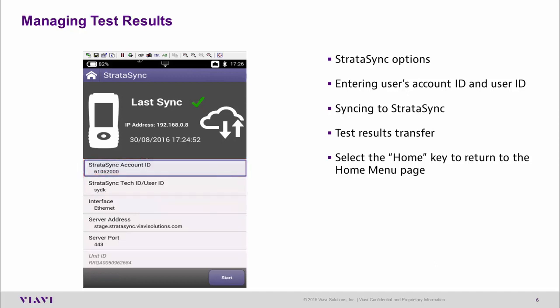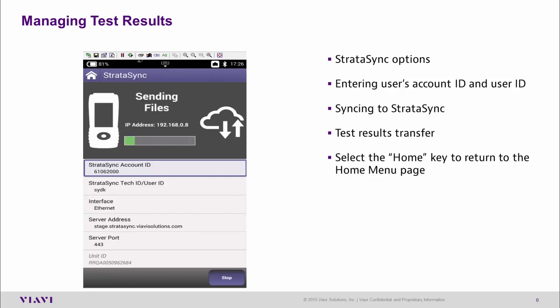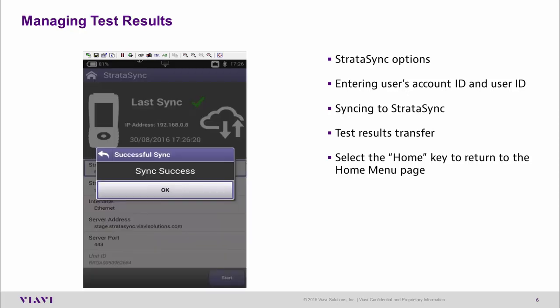Once you confirm these details — and you only have to enter this once when you first get the tester — simply hit the start button and you can see I'm connecting now to Stratasync. This is normally done via an RJ45 cable into the side of the tester, but it could also be done on the cable network you're working on. As you can see, we've had a successful sync. Any files that were on the tester are uploaded into Stratasync, any new options configured are downloaded onto your tester, and any new firmware required would be flagged at this time and we can select to download it. A very simple process.